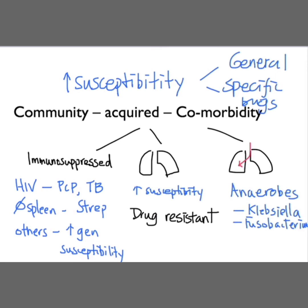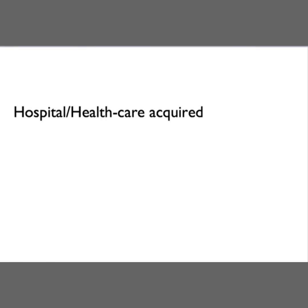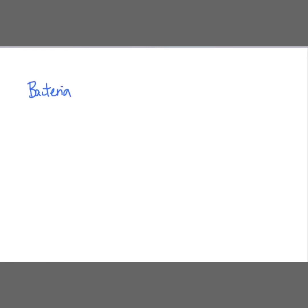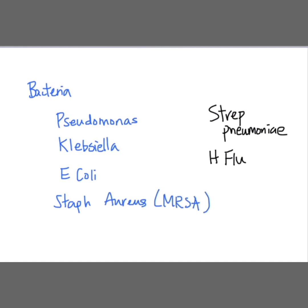Next, we will talk about hospital and healthcare acquired pneumonia. It is defined as pneumonia that occurs more than 48 hours after hospital admission, also known as nosocomial pneumonia. The most common cause is bacteria, including Pseudomonas, Klebsiella, E. coli, Staph aureus, and in particular methicillin-resistant Staph aureus (MRSA). It can also be caused by Streptococcal pneumoniae and H. flu. Depending on whether there is a viral infection outbreak, sometimes we do see viral causes such as influenza as the cause for nosocomial pneumonia.